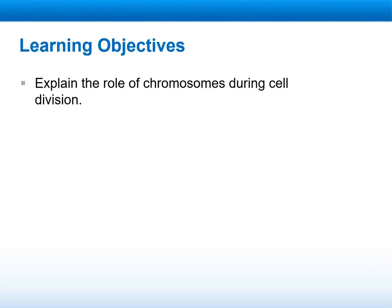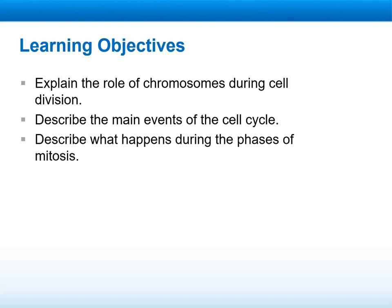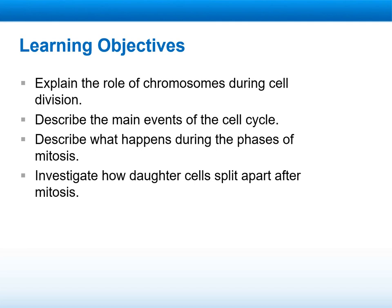During this week, we will talk about the role of chromosomes during cell division. We will describe each one of these events regarding the cell cycle, what happens during each phase of mitosis, and investigate the daughter cells — their spreading during mitosis and the end product for each one of them.